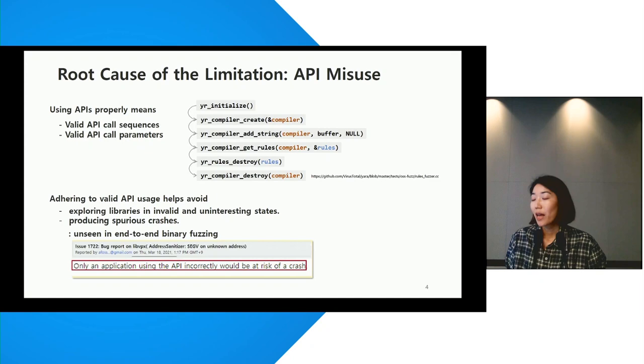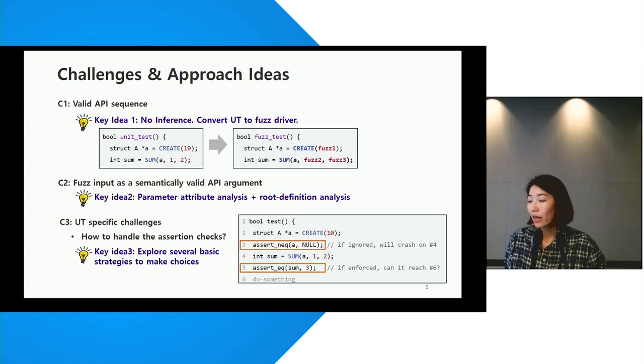So, extra caution must be taken when fuzzing libraries. There are three main challenges that we address. Firstly, how to acquire valid API sequence. To achieve this, we do not attempt to infer API usage. Instead, we use the exact API uses in unit tests and convert UT into fuzz driver.